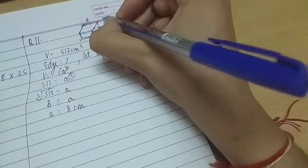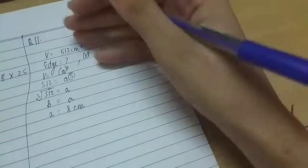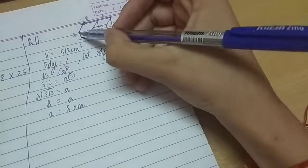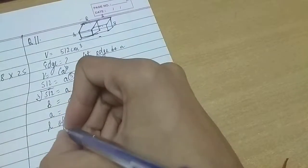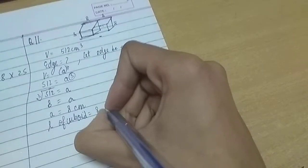Now see, all the edges are 8 cm. This is 8, this is 8, and all this is 8, right? So length, if you see, it would be 8. Length of cuboid, no difference would be there. Length of cuboid would be 8 cm.